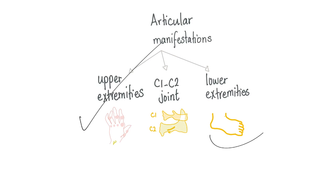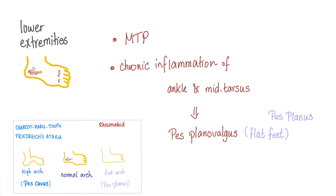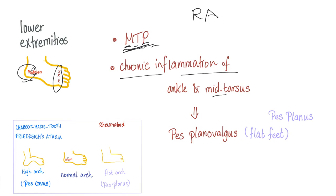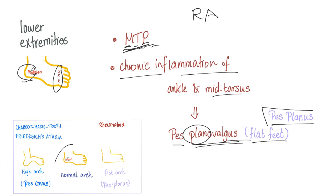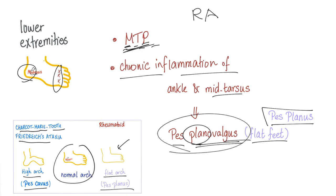We're done with the upper extremities. Lower extremities: rheumatoid arthritis involves the MTP — metatarsophalangeal joints. Chronic inflammation of the ankle and mid-tarsus leads to pes plano valgus, also known as pes planus. Pes plano valgus is the same thing as flat feet. Here is the normal arch; here is the high arch or pes cavus, seen in Charcot-Marie-Tooth disease and Friedreich's ataxia. But in rheumatoid, you see the flat arch — pes planus, or pes plano valgus.